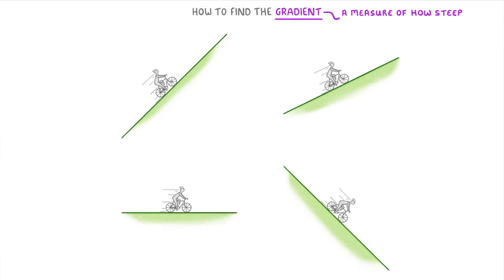Now the gradient is basically just a measure of how steep a particular line is. So if we took these four hills, this first one in the top left has the highest gradient because it's increasing in height most quickly. Or in other words it's the steepest.